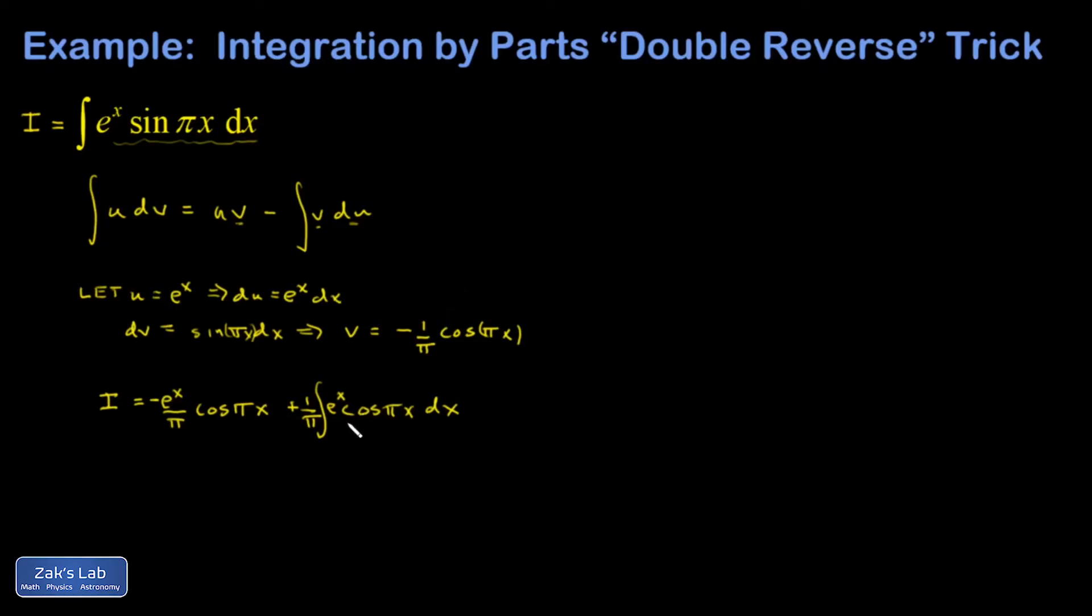If I were to let DV equal that piece and then integrate it, I would end up with a sine πx. So let's see how this works out. I'm going to let U equal e^x. Same pattern. DU is e^x dx.